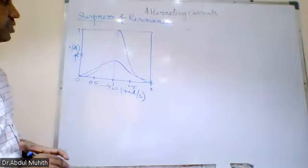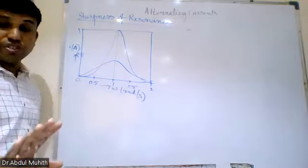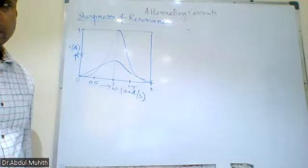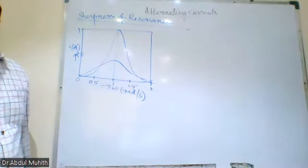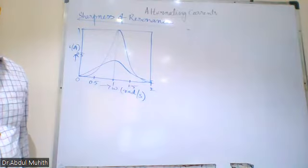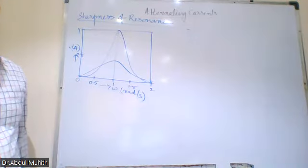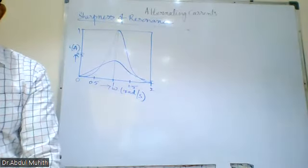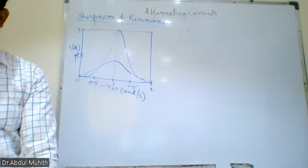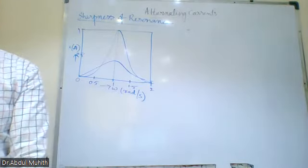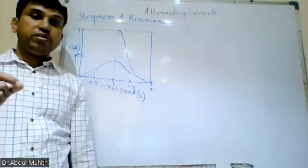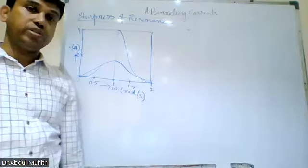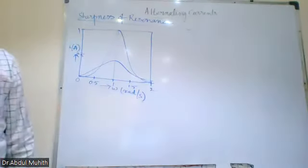Let's look at the sharpness of the resonance. What is resonance? Resonance is the phenomenon or the tendency to oscillate at a particular frequency called the natural frequency. If the frequency of the driver and the driven are both the same, that is said to be the resonance frequency — they both oscillate with the natural frequency.